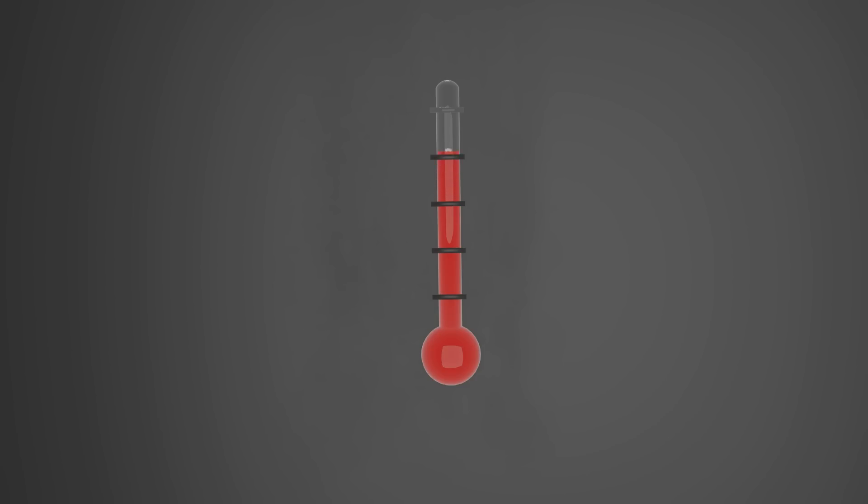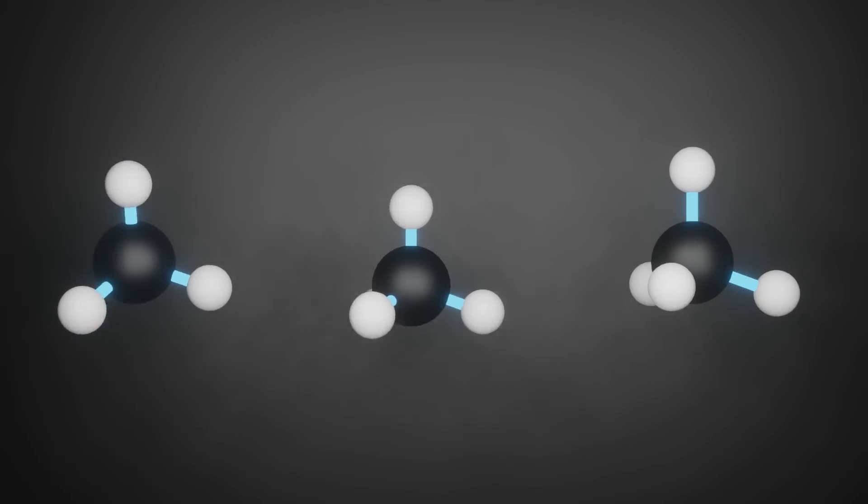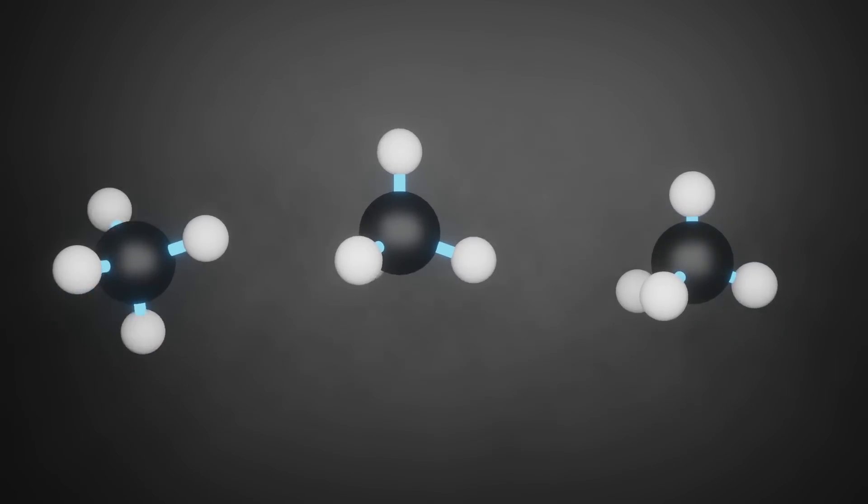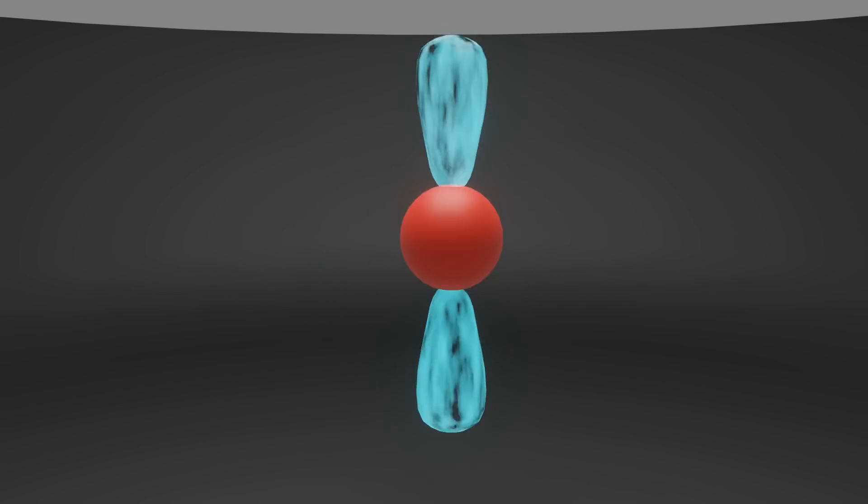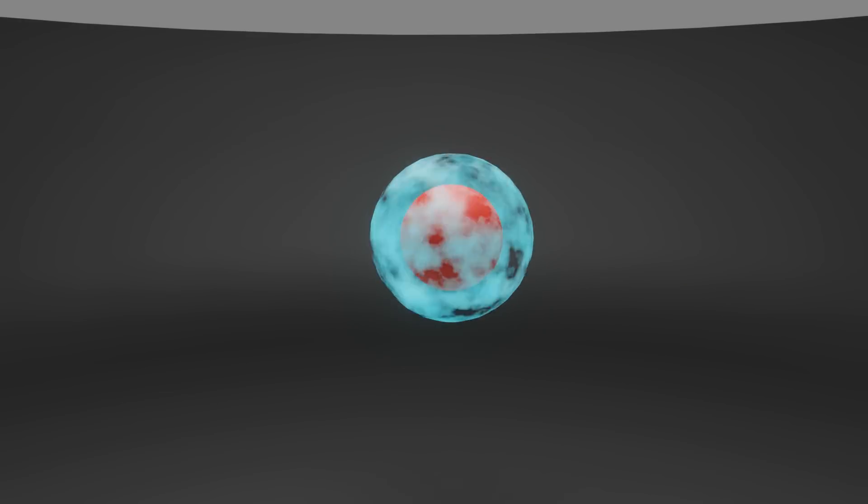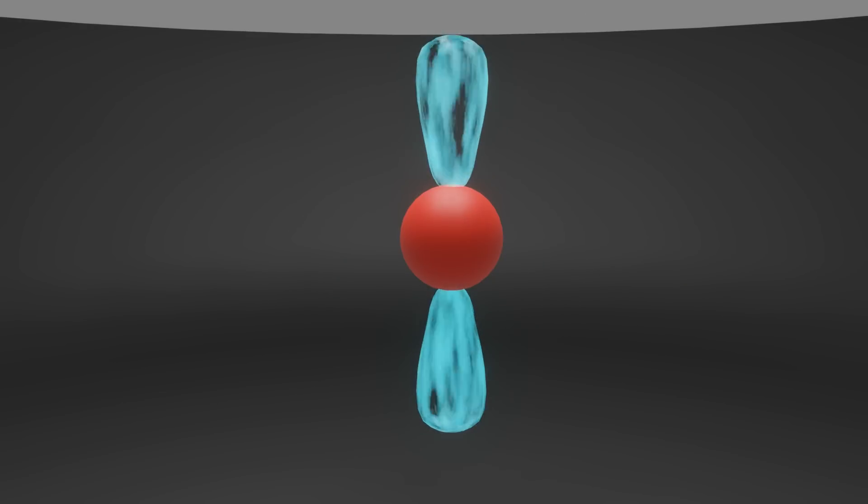But how does heat play into this? An opera singer, singing at the right pitch, can cause a wine glass to break. Molecules naturally vibrate with thermal energy. Like the breaking glass, if a molecule vibrates with the right frequency, those vibrations can stimulate the excitation of an electron into a higher orbital. When this electron returns back to its ground state, it produces light.